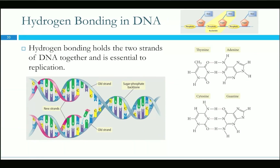Fun fact: hydrogen bonding is what holds the strands of DNA together. It's also the reason hair straighteners work — it's hydrogen bonds between the keratin strands that cause hair to be curly. When you heat the hair enough, the heat breaks those hydrogen bonds. If you hold the hair straight while it cools, the bonds reset in that straight configuration. As soon as you get it wet, the hydrogen bonds reset and hair returns to its natural state.